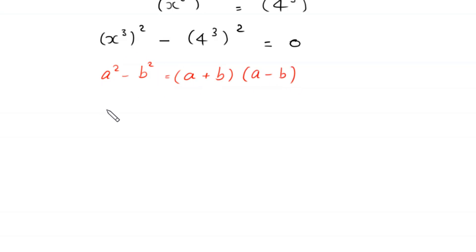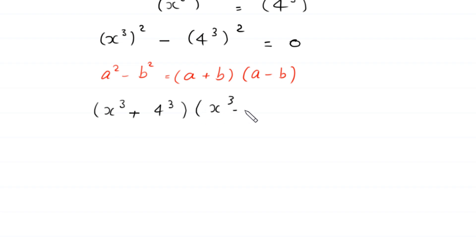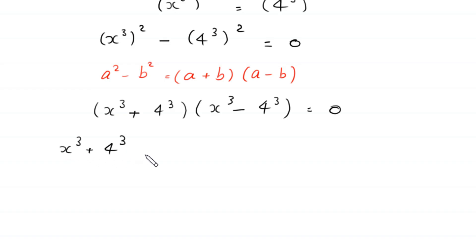Applying that identity, this becomes (x³ + 4³) times (x³ − 4³) is equal to 0. From here, either x cubed plus 4 cubed equals 0, or x cubed minus 4 cubed equals 0.